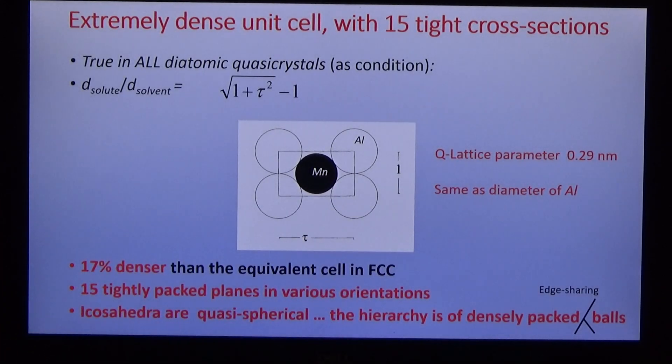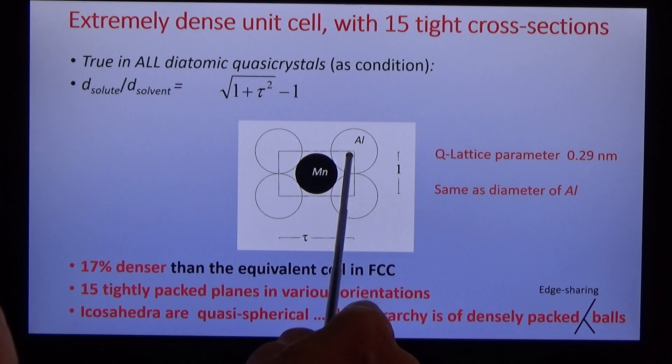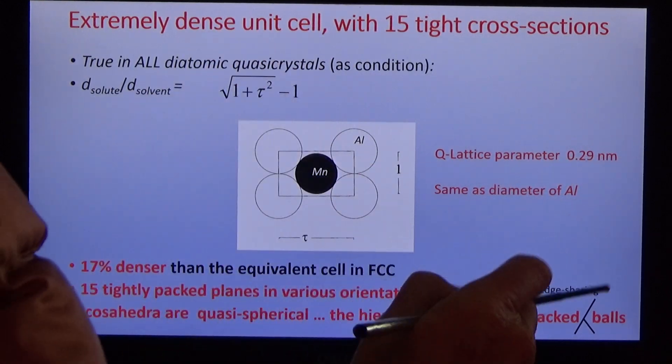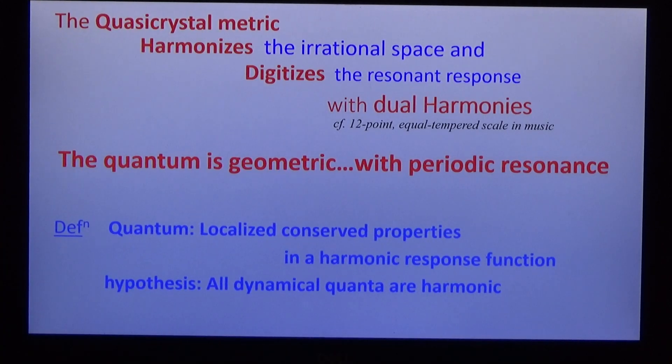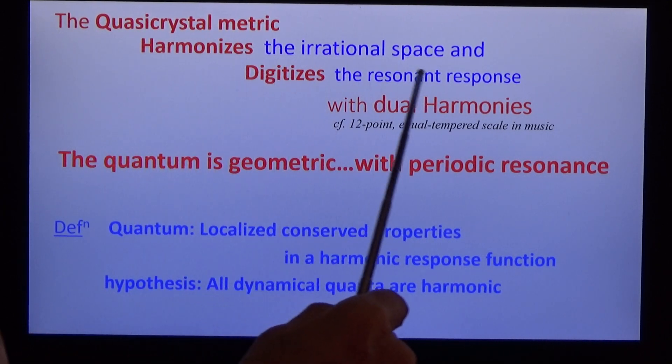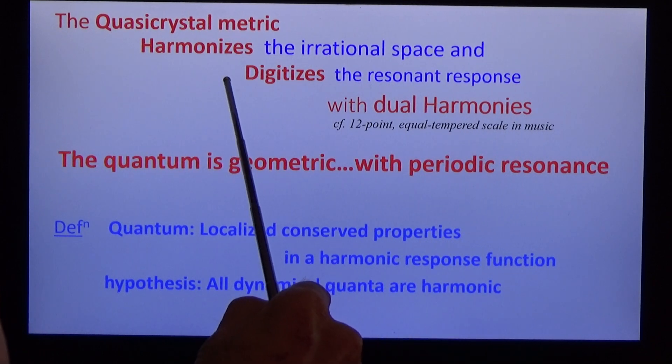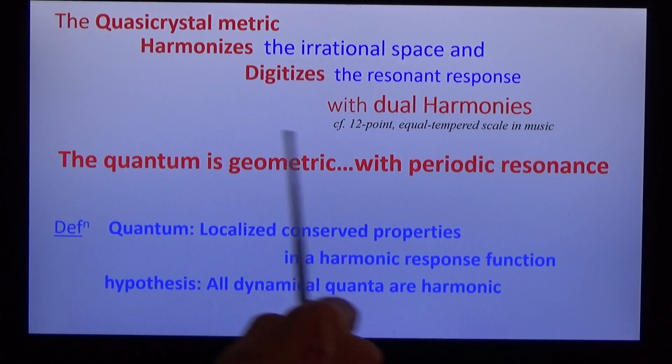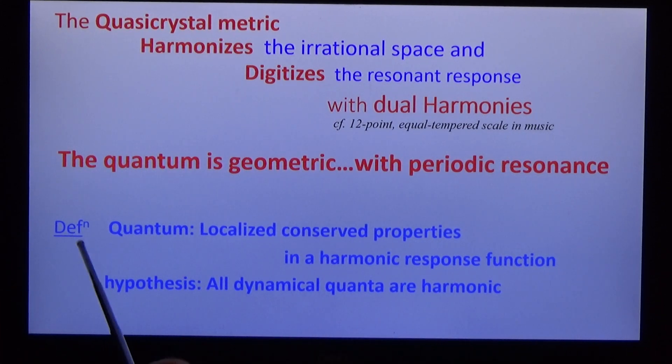We can make some measurements with that knowledge. And the first thing we find is that the lattice parameter derived from the diffraction pattern is exactly the same as the known diameter of aluminum, which verifies both the diffraction and the structure. We can come to some preliminary conclusions. The quasi-crystal metric harmonizes the irrational space digitized in the resonant response with dual harmonies. The quantum is geometric with periodic resonance. And we can define the quantum, localized conserved properties in harmonic response function. And we make the hypothesis, all dynamic quanta are harmonic.